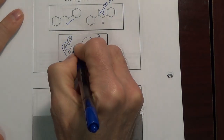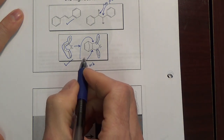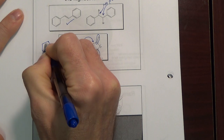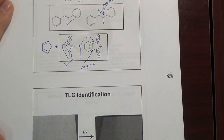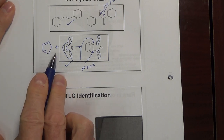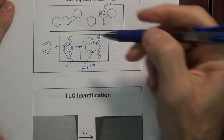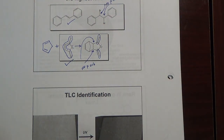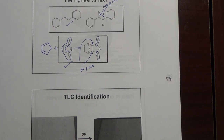By the way, this product comes from a Diels-Alder reaction where you react a cyclic diene with an alkene to get a six-membered ring and a one-carbon bridge — another Diels-Alder reaction that we sometimes do in Organic 1.